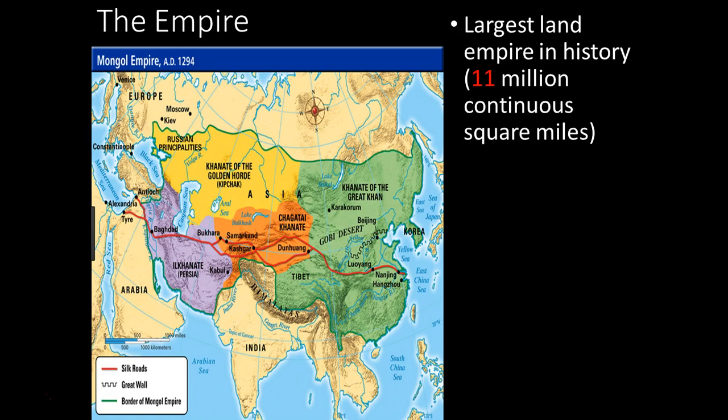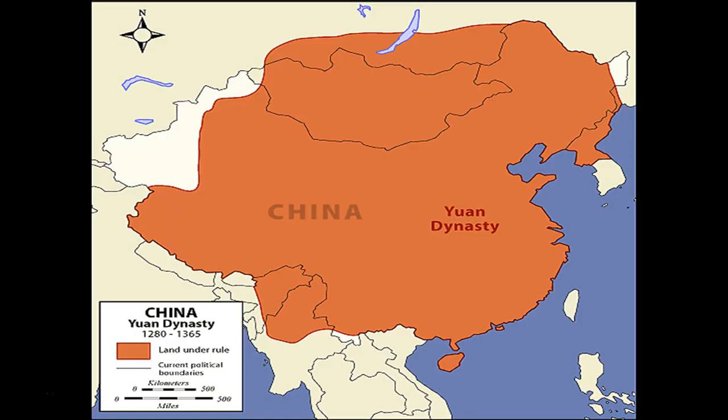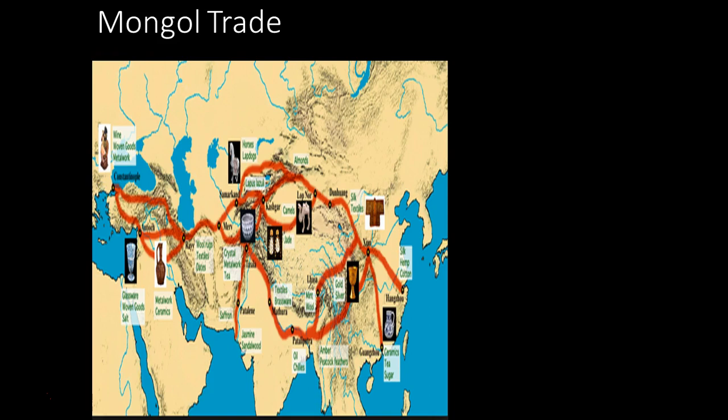Genghis Khan is a great powerful leader, but his sons may not be as great as he was. Kublai Khan was pretty good, but as the line goes on and they live in luxury, that dynastic control falls apart. They call themselves the Yuan Dynasty.